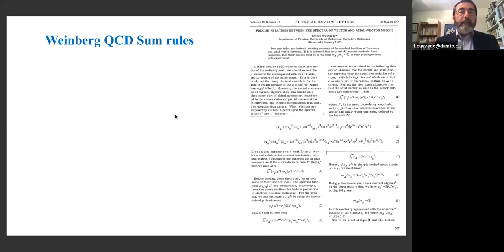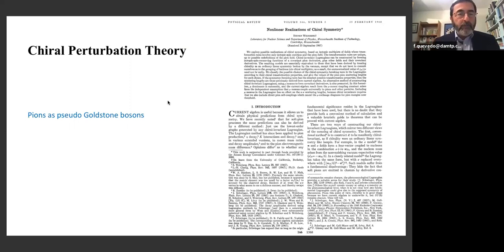These are called soft theorems. They're very popular now. Then he studied properties of strong interacting particles and described what are called Weinberg-Tomozawa rules, rules related to the masses of the spectrum of different particles that are satisfied for strong interactions, and they're tested experimentally in a positive way.